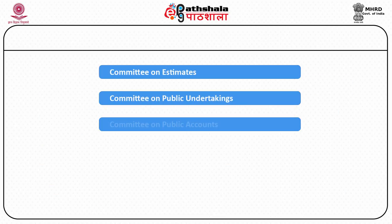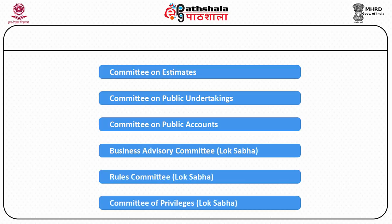Some ad hoc committees include select and joint committees on bills, the railway convention committee, the committee on draft five-year plan, and the Hindi equivalent committee. Each house also has standing committees like the business advisory committee, committee on petitions, committee on privileges, and rules committee. Of special importance are the committees on subordinate legislation, government assurances, estimates, public accounts, and public undertakings, which play an important role in checking governmental expenditure and policy formulation.